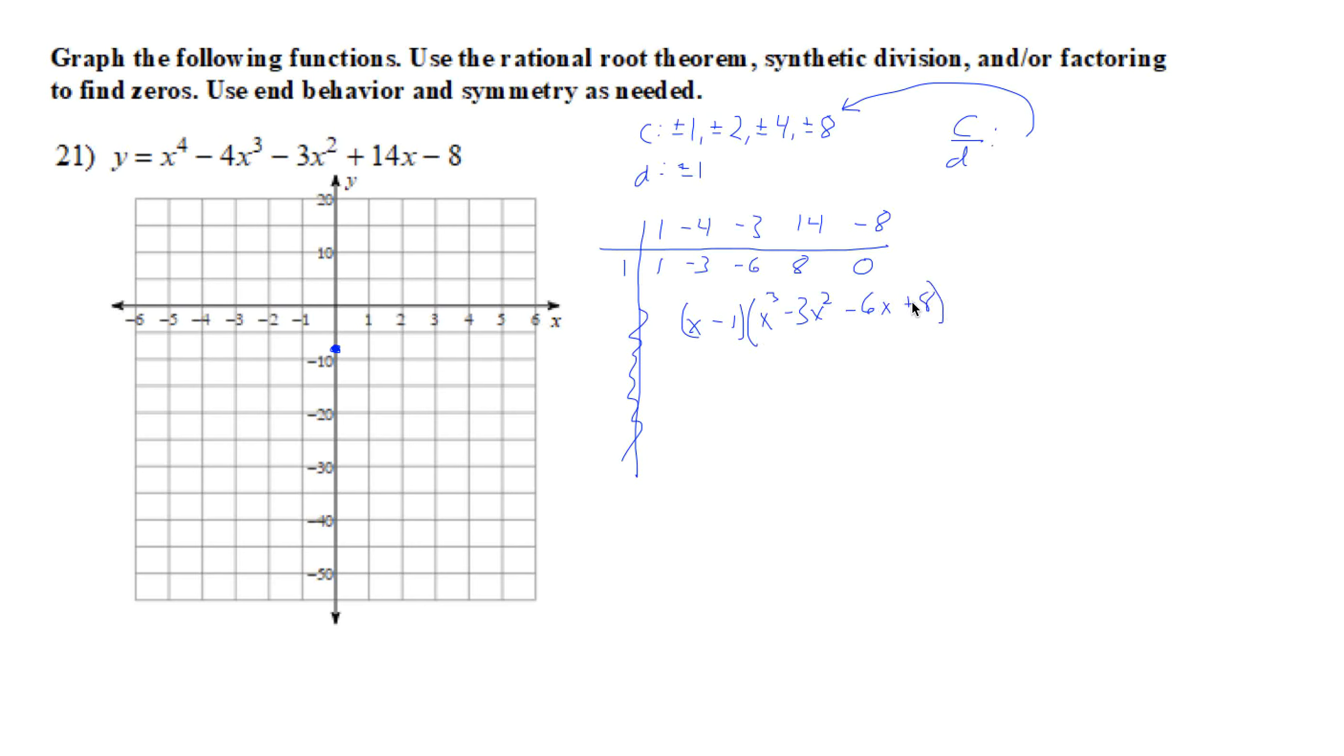Is what's left, and now we do C over D again. It's still an 8 here, so it's still these possibilities. 1 worked, so it still could work. If it worked once, it could work again. If 1 didn't work, it wouldn't work on this one. So let's just try 1 again.